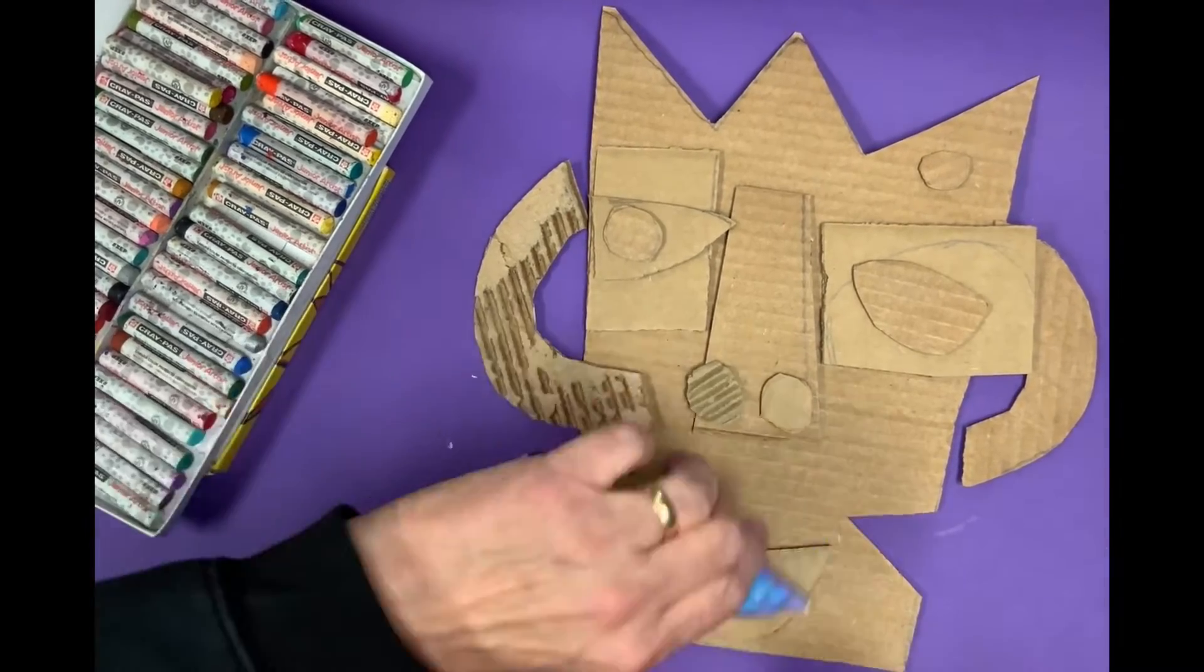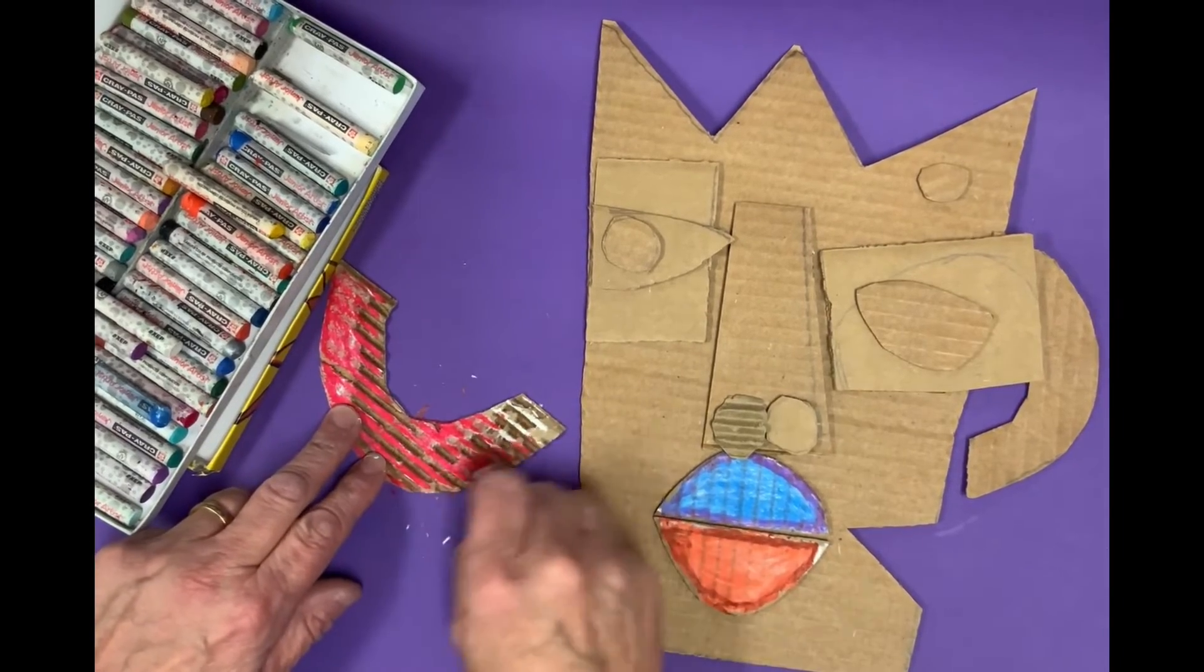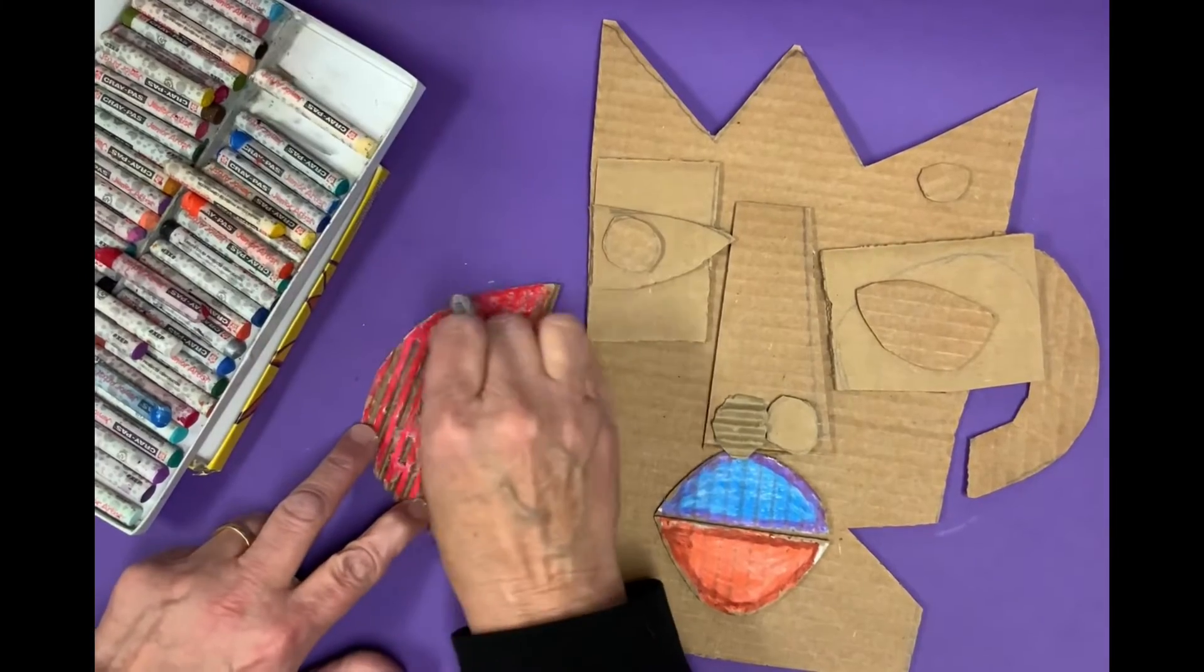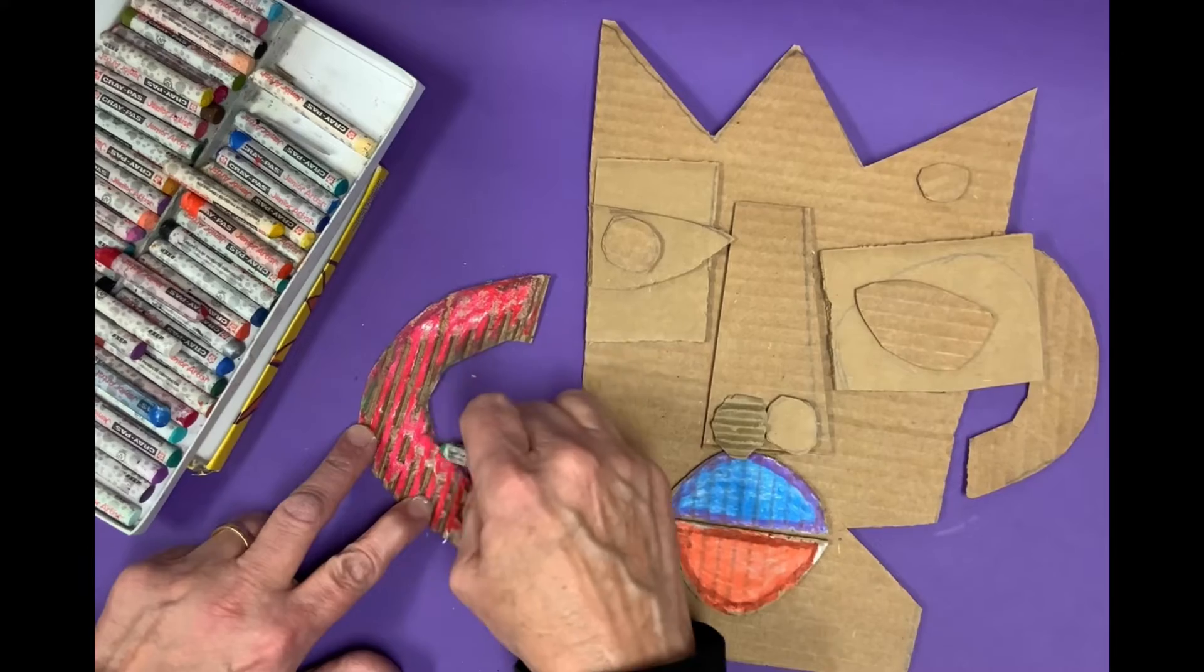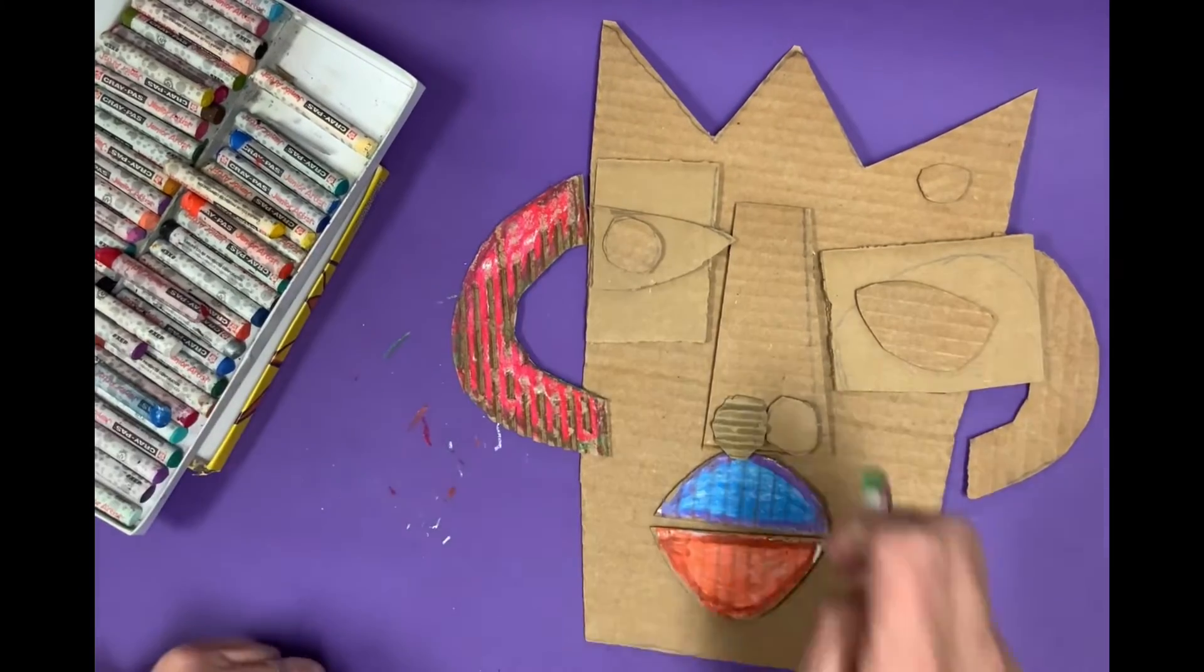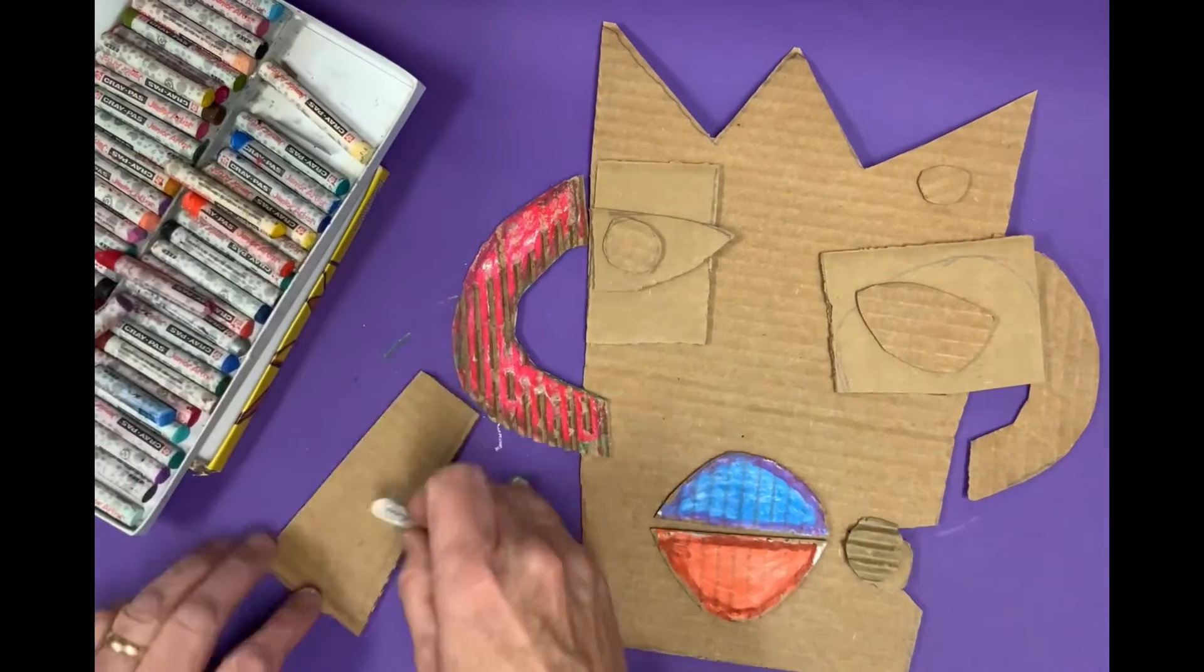We are going to do that for each piece of our mask. So I've done the upper lip and then the bottom lip. If you remember, we had talked about our artist Kimi Cantrell, who used all these beautiful bright colors, and so we are trying to do the same.